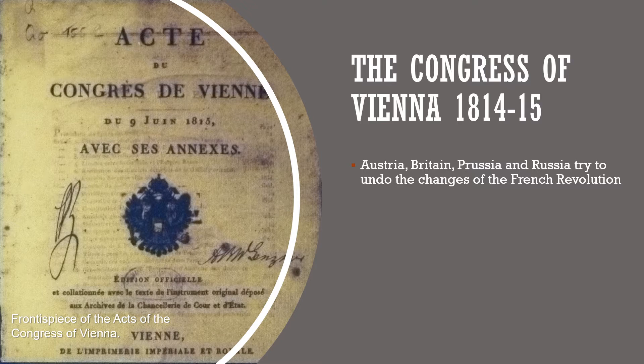They were operating under the principles of legitimacy and compensation. Legitimacy being the idea that the people who should be ruling countries are the people who have always been ruling countries — that is, the landed hereditary elite. Compensation being the idea that we should restore the borders of the different countries of Europe to their former status prior to the French Revolution and Napoleon's armies marching everywhere. In some cases, this meant some land shifted around in the interest of maintaining a balance of power in Europe.